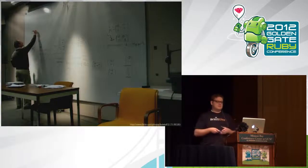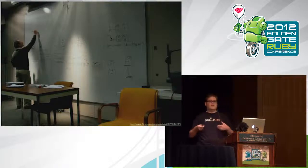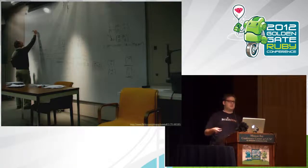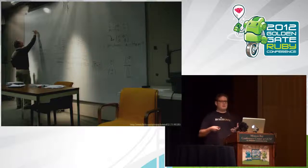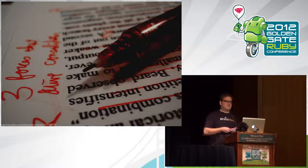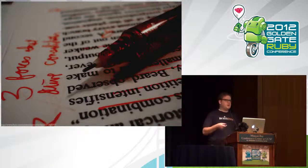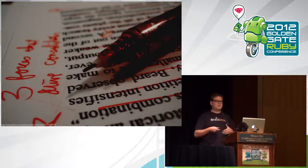Modern cryptography is a very rigorous science. It's based on hard math problems considered hard to solve on classical computers. For example, factoring large numbers into their base primes is extremely hard, and that's the basis for RSA, a popular public key cryptography algorithm. What we're doing with modern cryptography is betting that there are going to be no major advances in math or in computing.